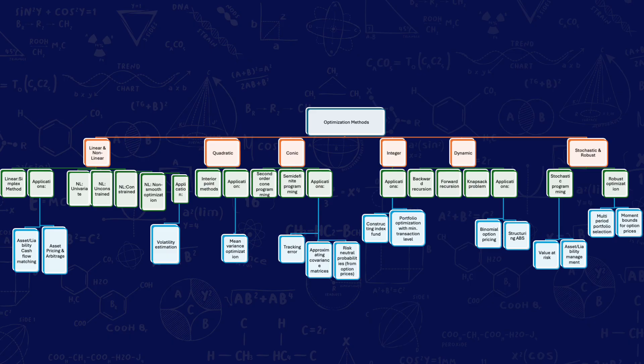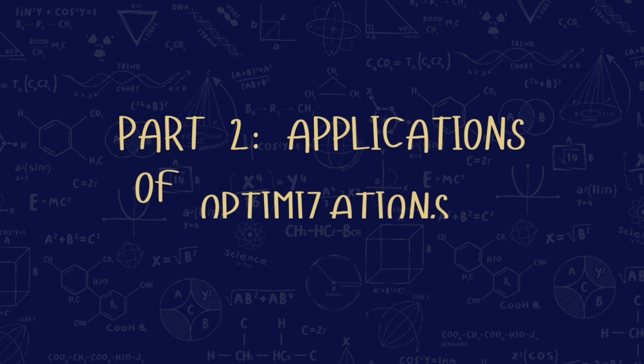A short recap: if your problem is simple and linear, use linear programming. If there is a curve or trade-off like risk versus return, use quadratic programming. If your limit is like a round boundary, use second order cone programming. If you're working with matrices and want to fix them, use semi-definite programming. If you have yes/no or whole-number decisions, use mixed integer programming. If your problem is step-by-step over time, use dynamic programming. If there are different possible futures and you want the best plan on average, use stochastic programming. And if you want to be safe no matter what, use robust optimization.